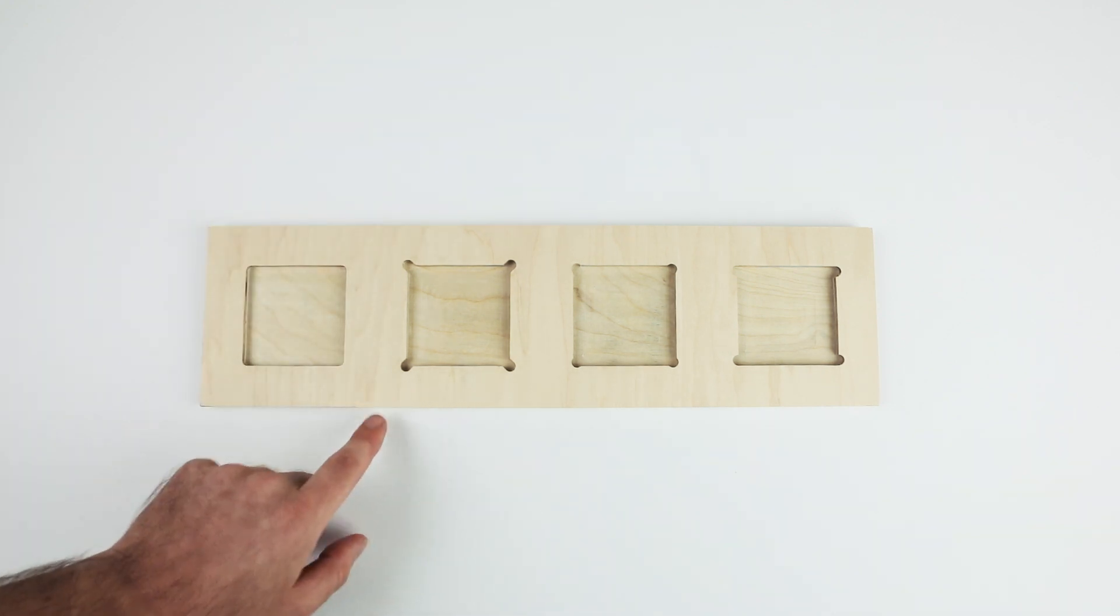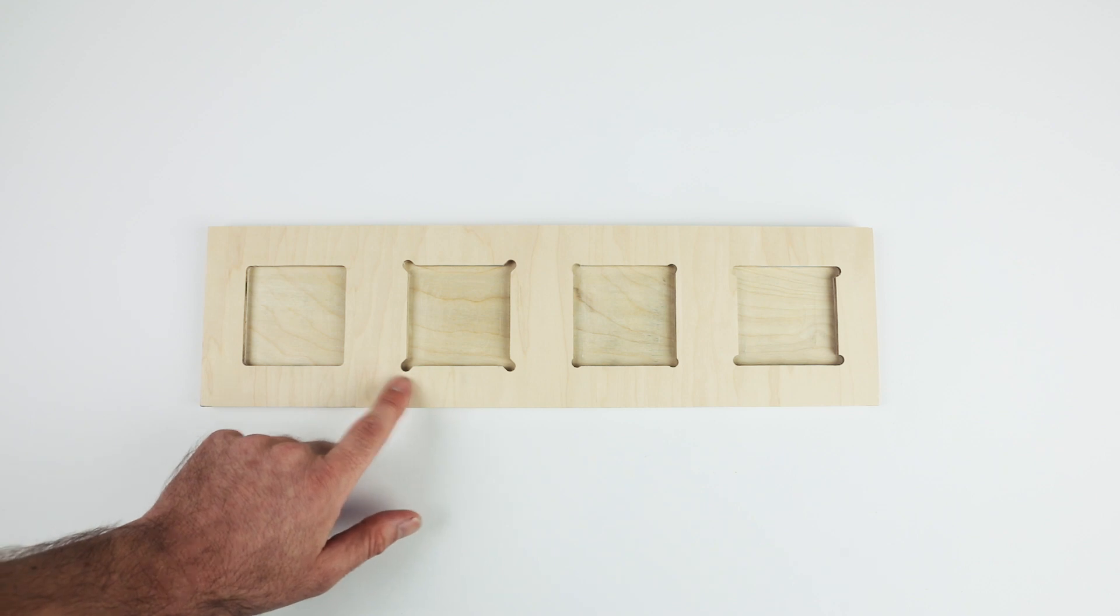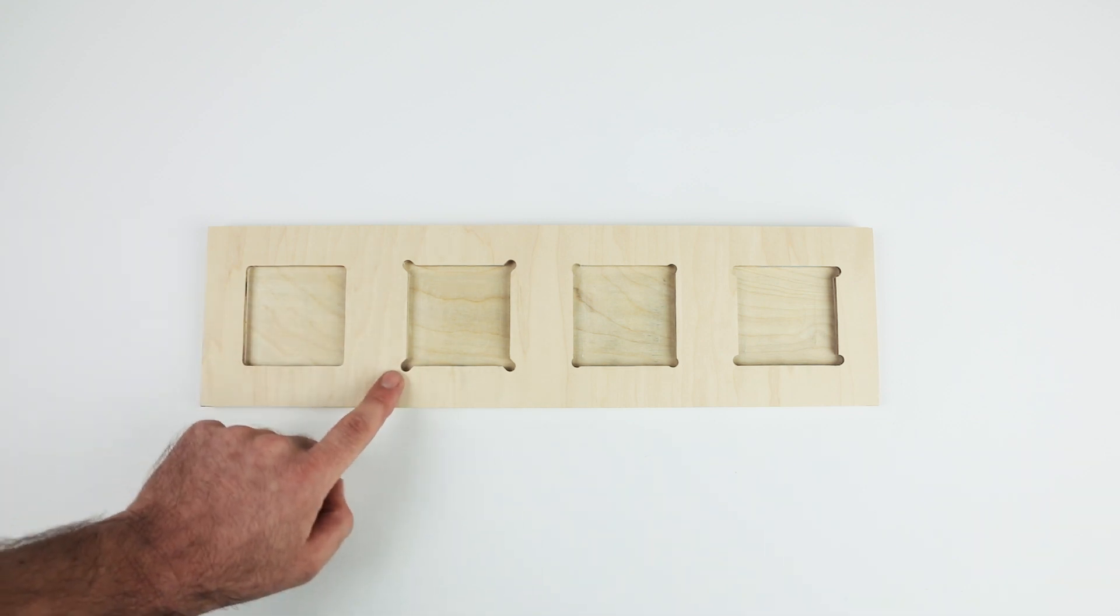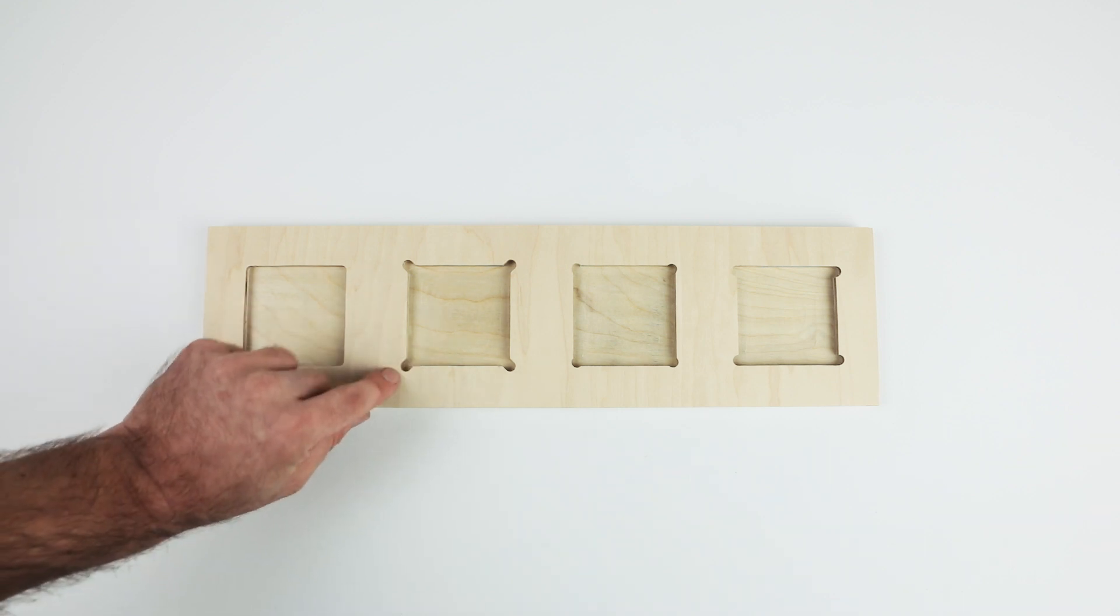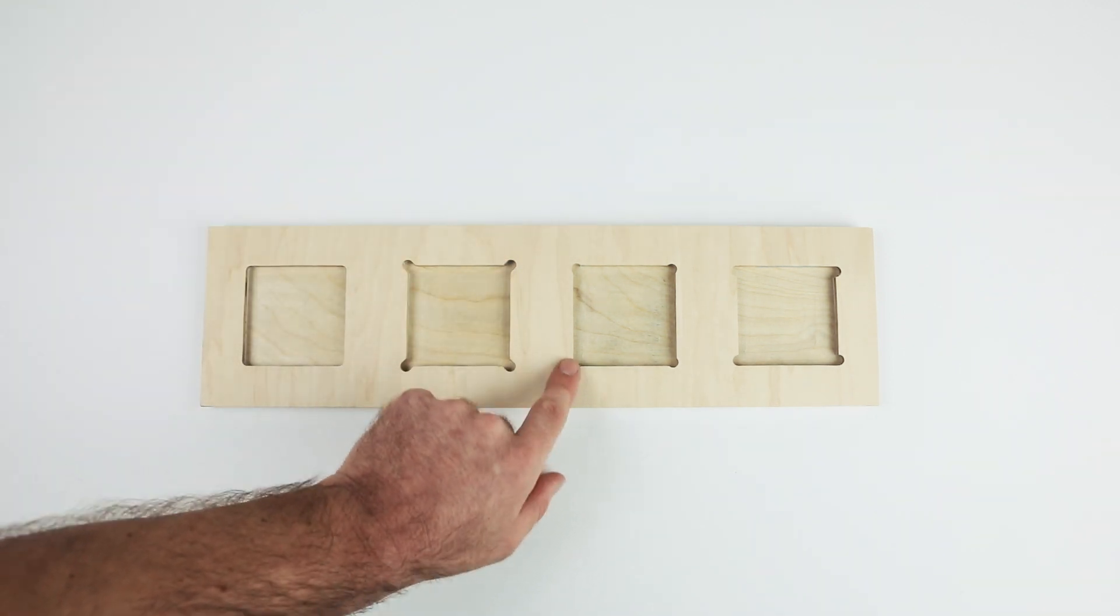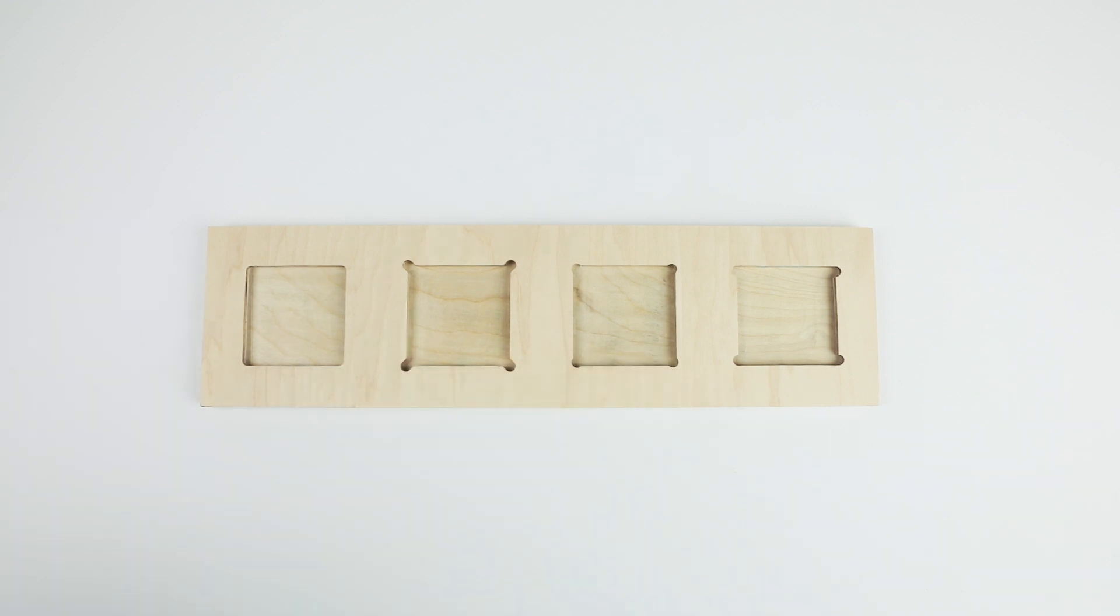So one of the options is to add what they call dog bones or corner relief details. So you would design this into your file and mill out more material, enable the cutter to get into these edges, and make way for that square edge to fit in.